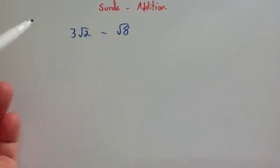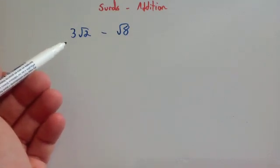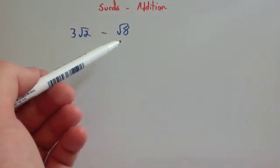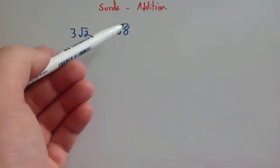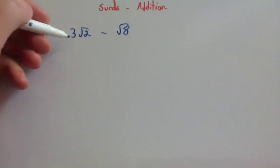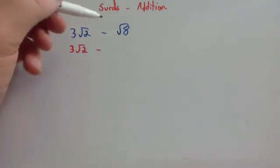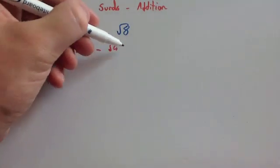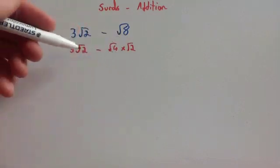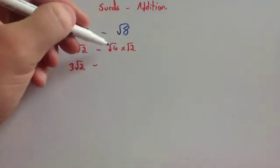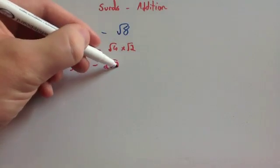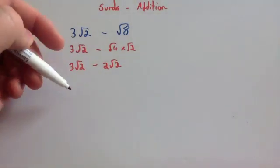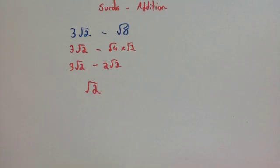Let's try subtraction now — it's very similar, actually the same except for the last step. We've got 3 root 2 minus root 8. Root 8: the largest square number that divides 8 is 4, so root 8 is root 4 times root 2. The square root of 4 is 2, so we get 3 root 2 subtract 2 root 2. That's 3 lots of root 2 take away 2 lots of root 2, which is 1 lot of root 2 — or just root 2.